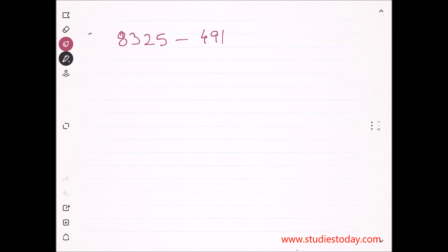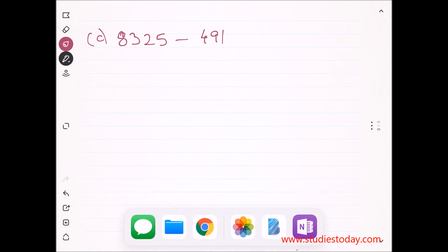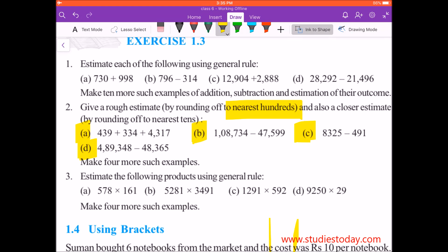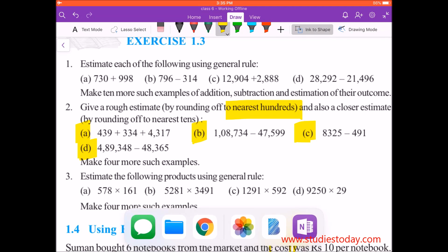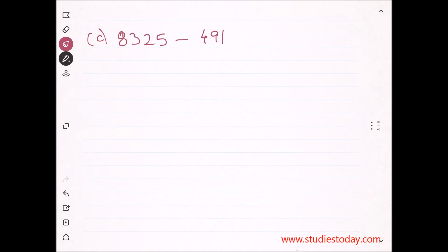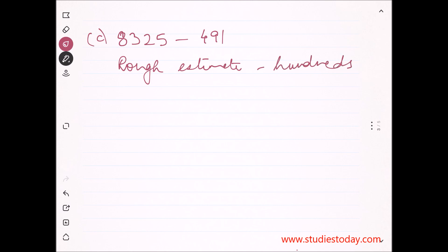Now we move to the next question, which is Part C. We can check that from the book: 8325 minus 491. Again, I'm reminding you — we are making a rough estimate by rounding off to nearest hundreds.